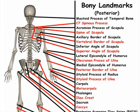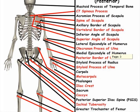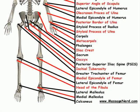Iliac crest, right here. Sacrum, right here. Posterior superior iliac spine, right here. Ischial tuberosity, right here. Greater trochanter of the femur, right here.